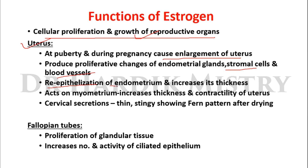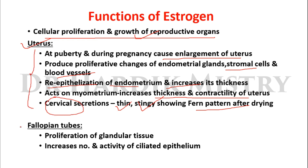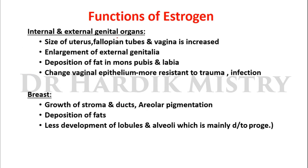Under the effect of estrogen, there is re-epithelialization of the endometrium and an increase in the thickness of the endometrium. It acts on the myometrium, increasing the thickness and contractility of the uterus. Cervical secretions become thin and stringy — a fern pattern appears after drying. In the fallopian tubes, there is proliferation of glandular tissue and an increase in the number and activity of the ciliated epithelium.